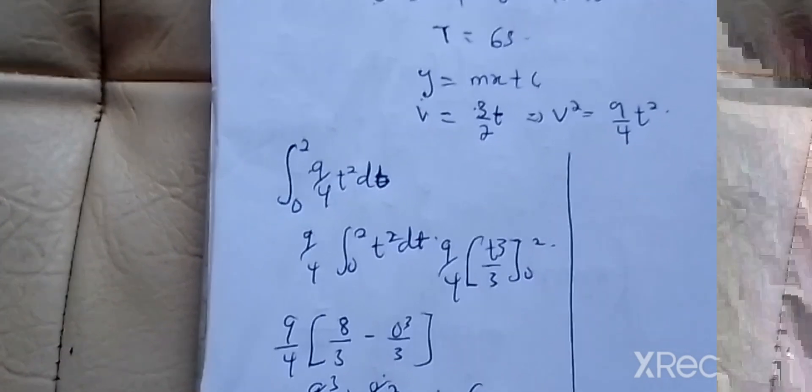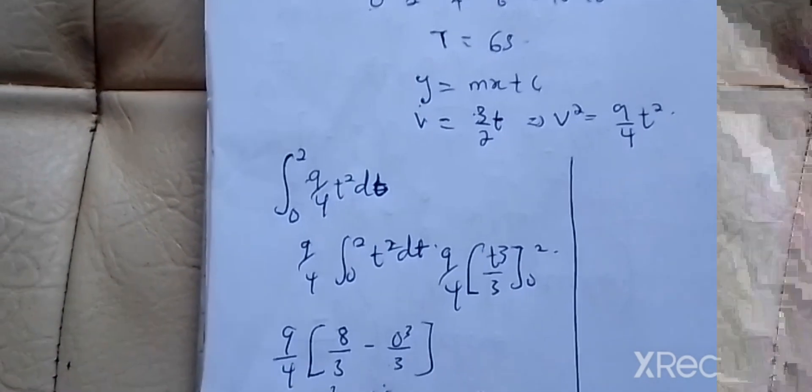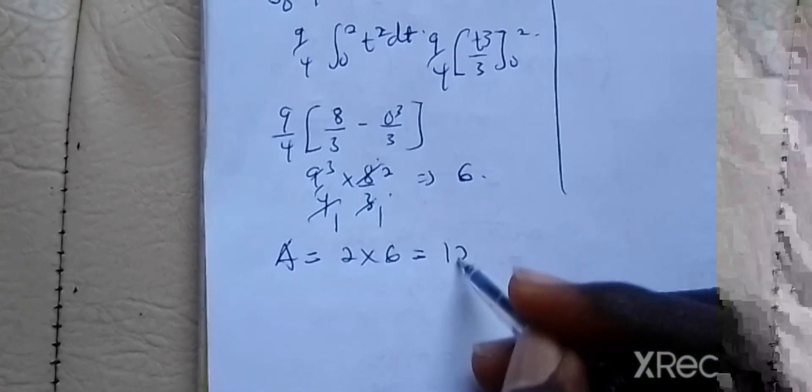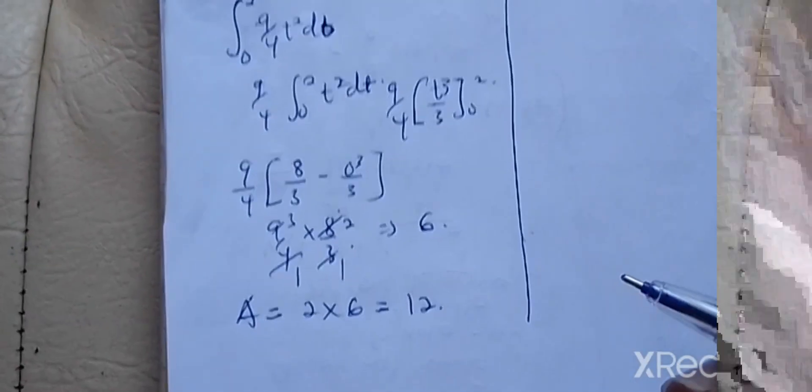But here we are having 2 of them making this whole waveform, so we multiply it by 2. So our area finally becomes 2 times 6, and that will give us 12.